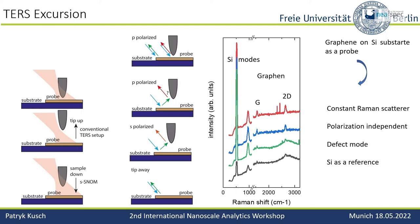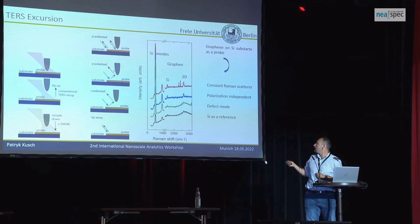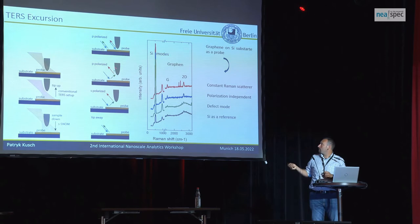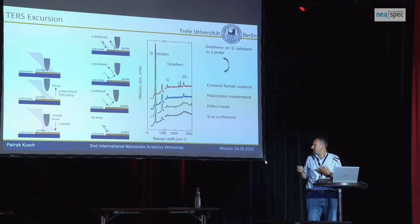We see in the red spectrum when in contact: a 2D band, a G band, and the silicon modes. Then we put the tip up. We see a slight decrease — we have a dominant peak still coming from sample-tip scattering. We don't know exactly about the plasmonics here; once we move the tip there will still be some near-field around it which may also enhance the signal.